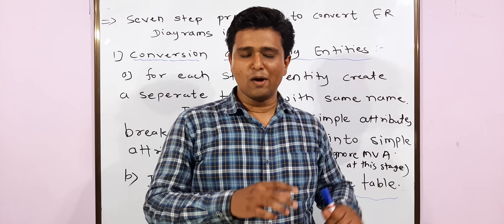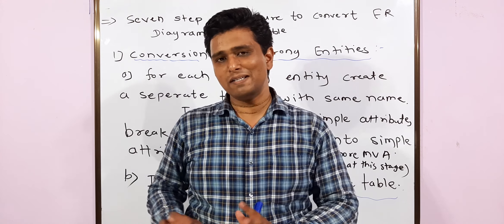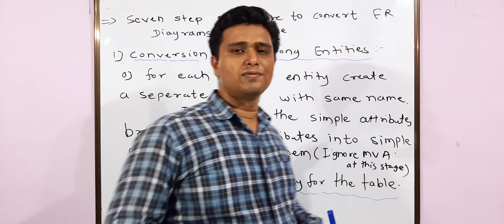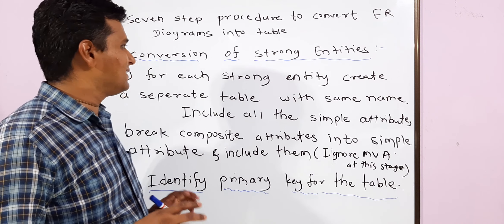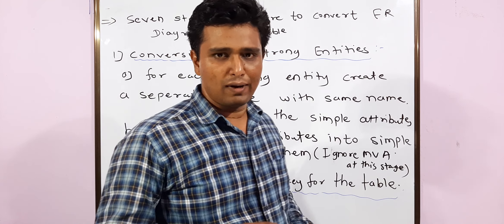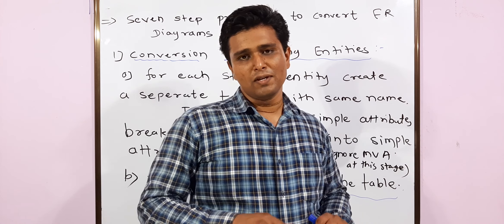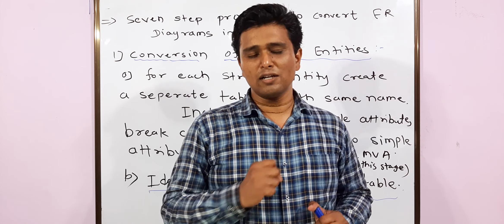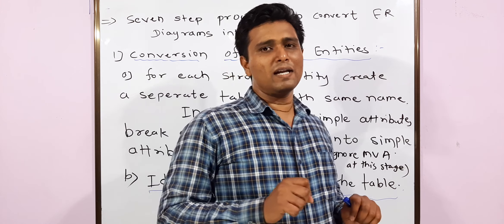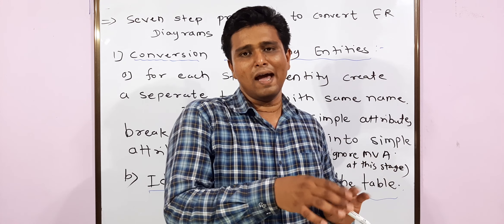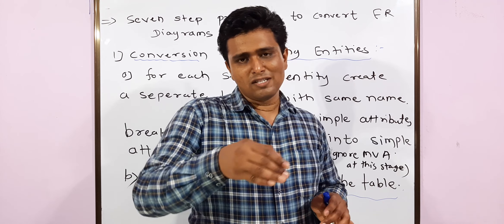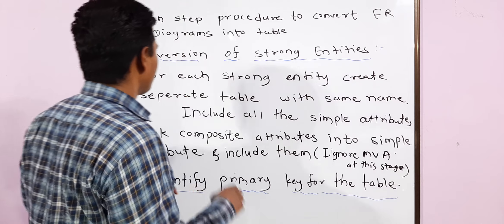Hello friends. Now we are going to study how to convert an ER model into tables. We have seven steps. We will start with the first step: conversion of strong entities. In an ER diagram we have seen there are six steps where we find out which is the weak entity and which is the strong entity. After classification, we take a strong entity and make a separate table for it. Strong entities may have composite attributes, and we have to divide those into singular attributes.